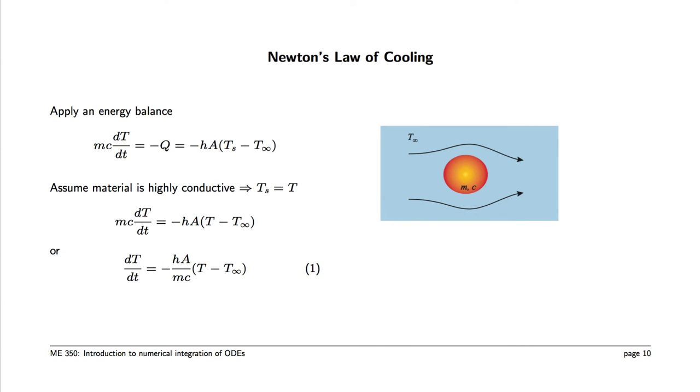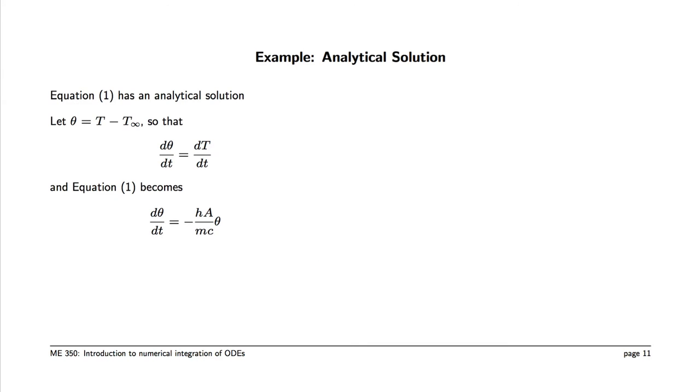Isolating the time derivative of temperature on the left-hand side, we get minus ha over mc, which is the inverse time constant, times T minus T infinity on the right. If we introduce a new variable theta as the temperature difference, we get a simpler equation because the time derivative of theta is the same as the time derivative of temperature. Equation 1 then becomes d theta/dt equals minus ha over mc times theta.